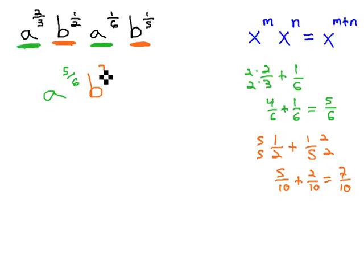The new exponent on b is seven-tenths, and we have now multiplied this expression together, giving us a to the five-sixths, b to the seven-tenths.